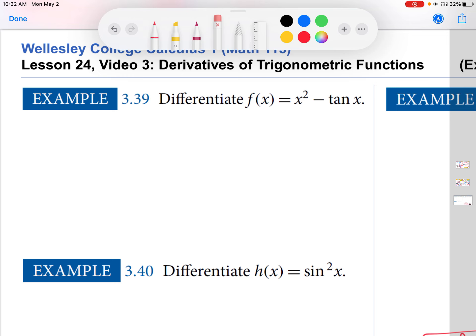So I'm going to use my differentiation properties, which says that I can just differentiate x squared, and then I can differentiate tangent x. And then because the function is the difference of those two, I can then just find the difference of those derivatives.